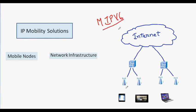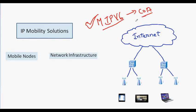In Mobile IPv6, a mobile node will be given a new care-of address when it moves from one access router to the other access router, or when it changes the network. This is also an IP Mobility solution — when the mobile node changes the network, a new IP address is assigned to the mobile node so that the mobile node maintains the connection.